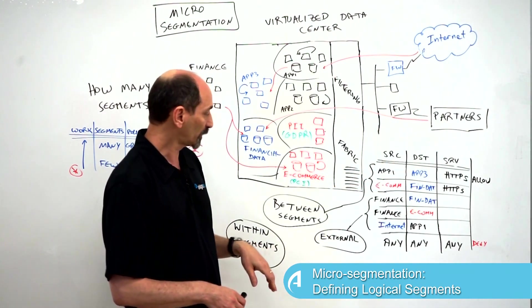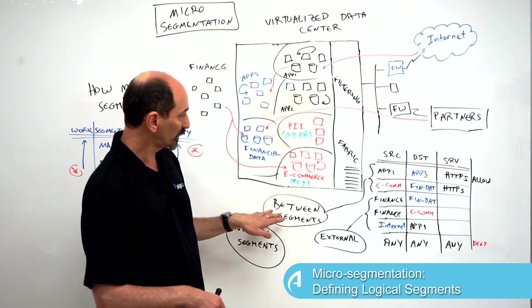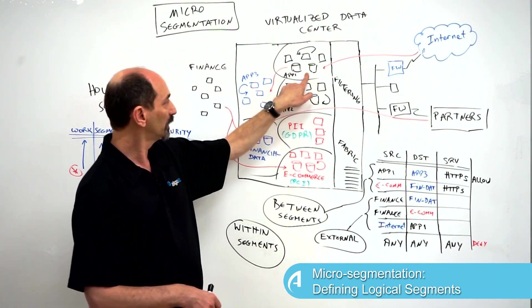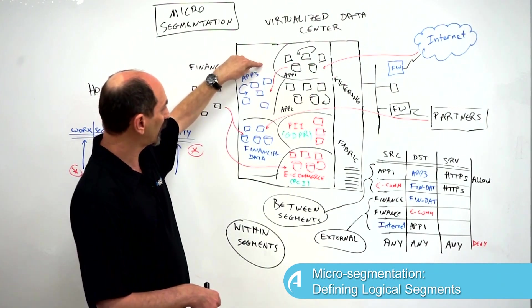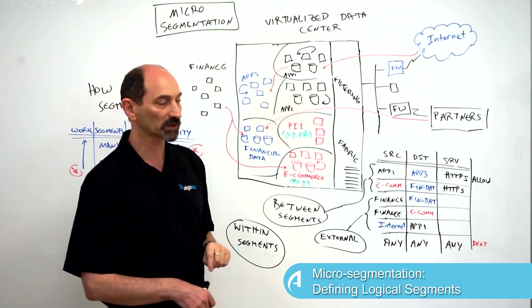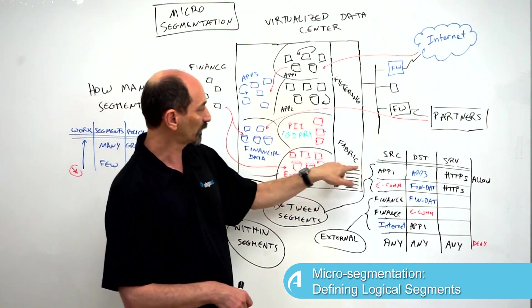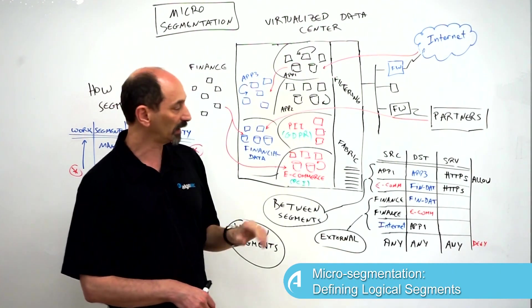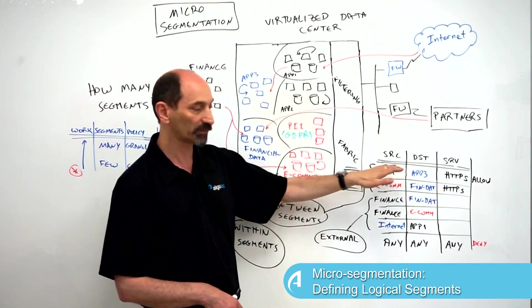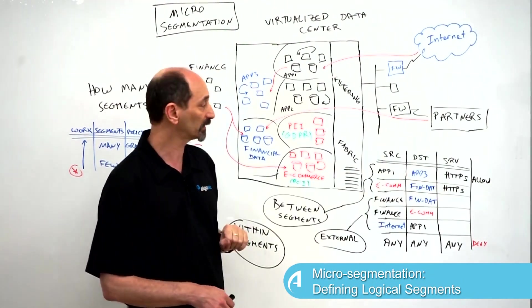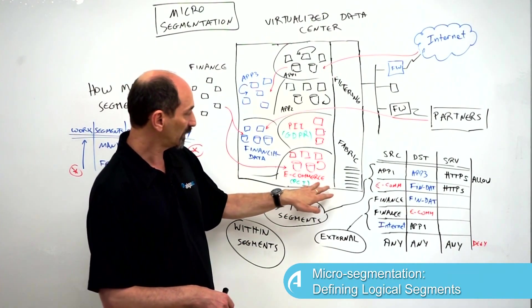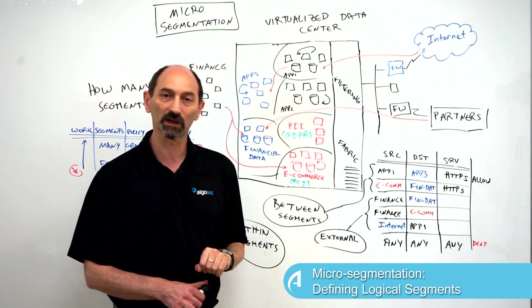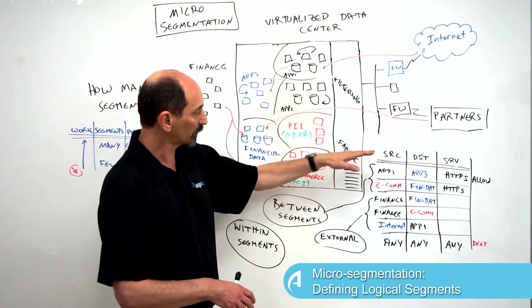Now what types of rules are we going to be writing in this policy? First of all, we're going to be writing rules allowing traffic between segments. Imagine application number one needs to communicate and access data that is part of the zone of application number three. We will have to write a rule allowing that because that traffic is crossing the segment boundary and will only be allowed if there's an explicit rule in the policy allowing it. Likewise, the e-commerce servers might need access to the financial data, so we might need a rule for that as well.